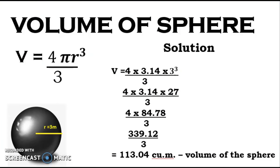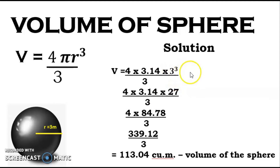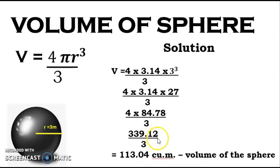For the volume of a sphere, the formula is V equals 4 times pi times r cubed divided by 3. Using radius 3: 4 times 3.14 times 3 cubed divided by 3. Since 3 cubed is 27, we have 4 times 3.14 times 27 divided by 3, which equals 4 times 84.78 equals 339.12 divided by 3, giving us 113.04 cubic meters as the volume of the sphere.